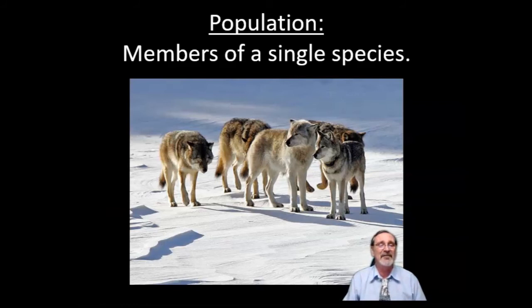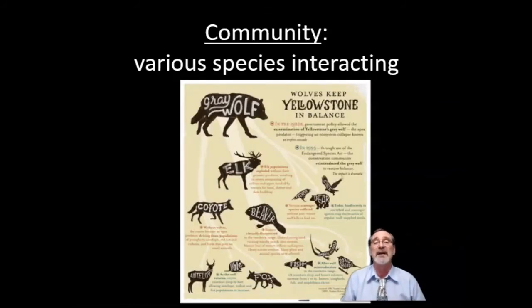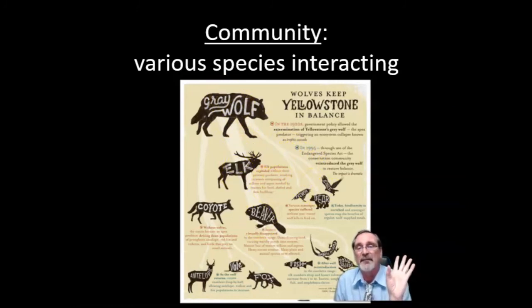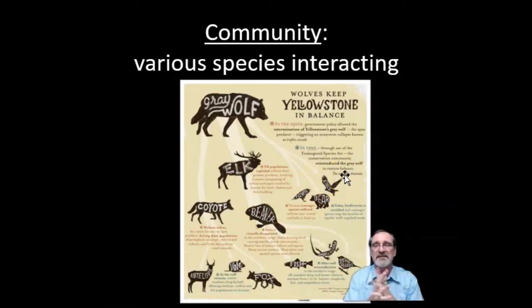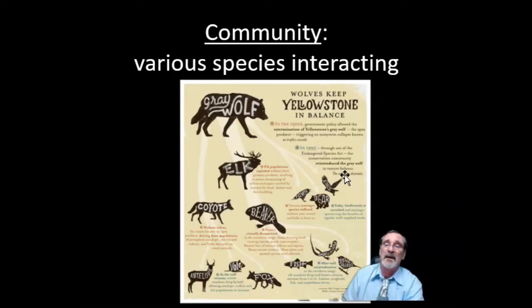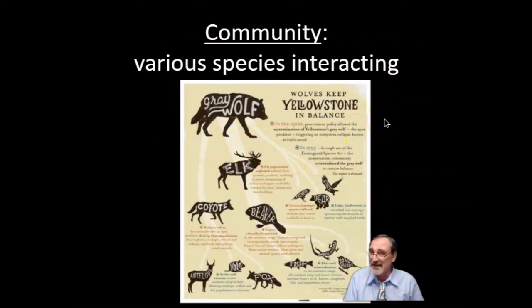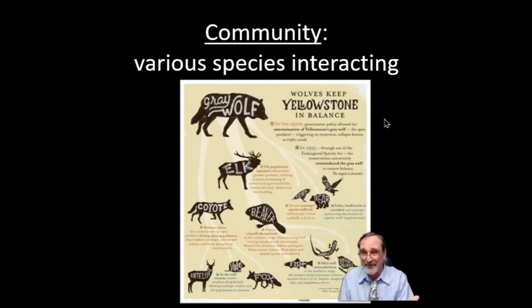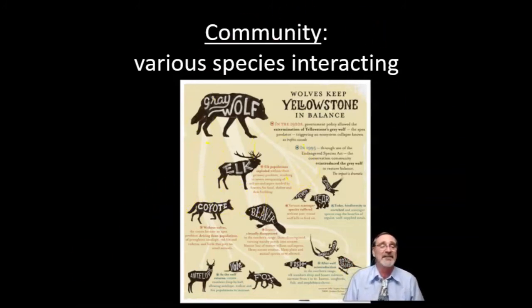The next level is community. A biological community means various species interacting. For example, the wolves in Yellowstone interact with a whole lot of different species — elk and beaver, which they hunt, as well as voles, mice, and other small rodents that are a mainstay of the wolf diet. They also have competitors like coyotes. You might also consider plant species in the community. Wolves don't eat plants, but they eat organisms that do — like the grass that elk eat.